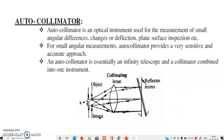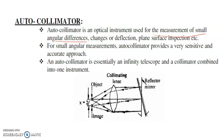Autocollimator. An autocollimator is an optical instrument used for the measurement of small angular differences, changes or deflection, and plane surface inspection such as flatness measurement. This autocollimator provides a very sensitive and accurate approach in measurement.